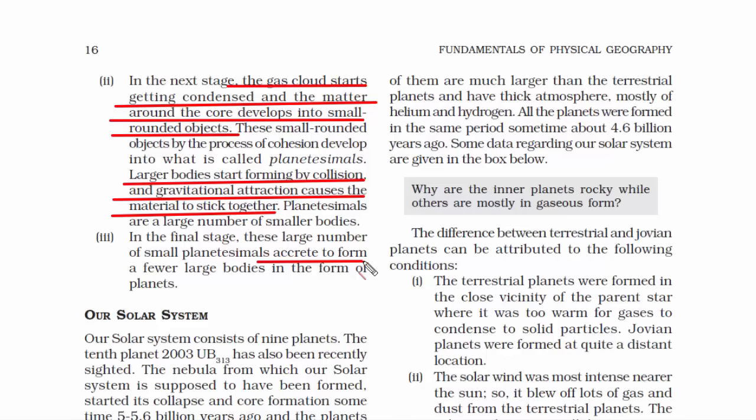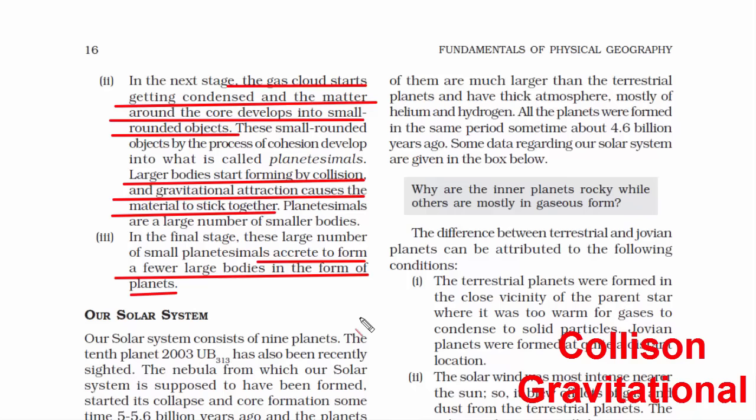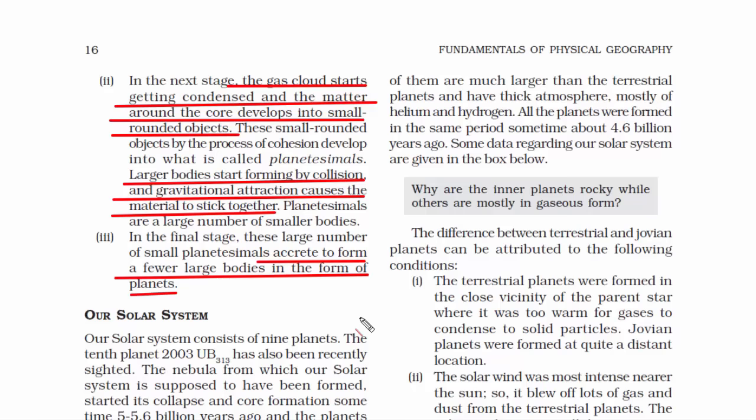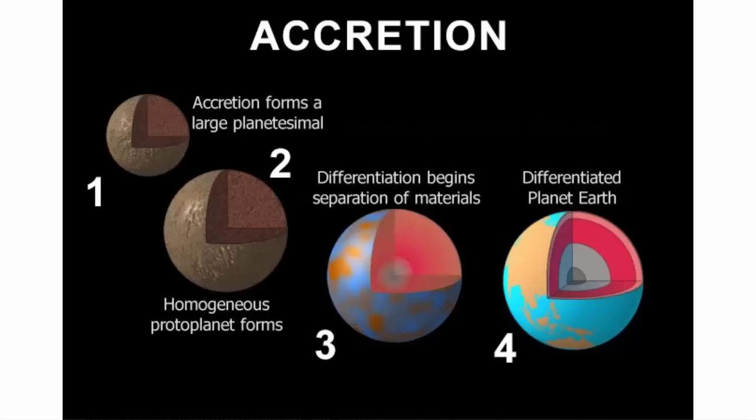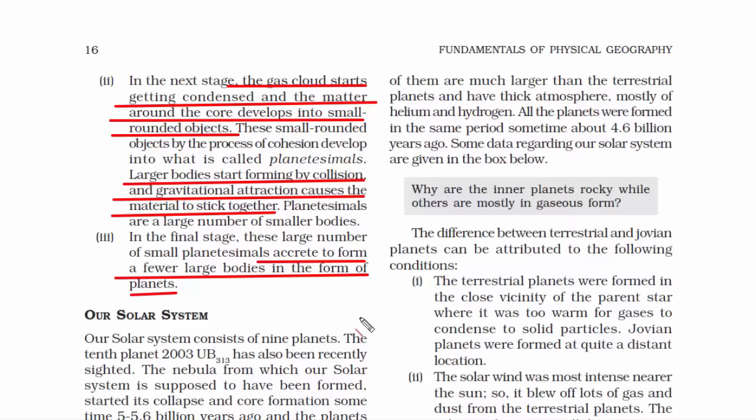Most of the things happen because of collision and gravitational attraction. Because of these phenomena, the materials stick together, making a large number of small bodies. In the final stage, these large numbers of small bodies accrete to form a few larger bodies. The meaning of accrete is forming layer after layer. So these smaller bodies, with time, have several layers formed on them. As a result, from a small body it becomes a large body — and that's how planets are formed.